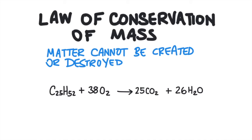Chemical equations must obey the law of conservation of mass, which states that matter cannot be created or destroyed during a chemical reaction. We must have the same amount of atoms on each side of the equation. Chemical bonds will be broken and reformed, but we must still have the same total number of atoms.